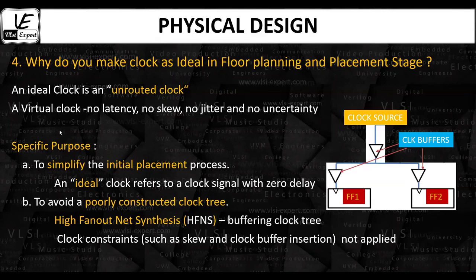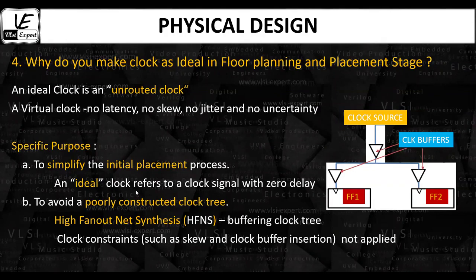Since the clock has no real-world properties, it is called an ideal clock. In the context of physical design, making the clock ideal during the floor planning and placement stages serves specific purposes. An ideal clock refers to a clock signal with zero delay, and it will be synthesized during the clock tree synthesis stage. During floor planning and placement, clocks are defined ideally — assuming no skew or insertion delay from clock buffers — simplifying the initial placement of all cells without considering clock constraints.